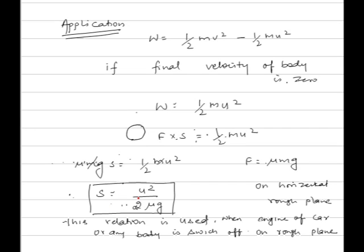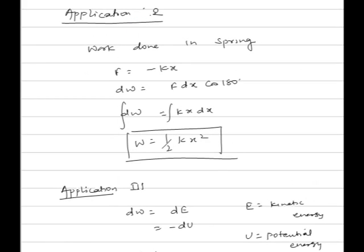Second application: work done in a spring. A spring is an example of a variable force, where force equals minus k into x. The negative sign indicates that F always opposes x. dW equals F into dx cos θ, where θ is 180 degrees, so dW equals k into x dx. Integrating both sides, work done equals half k into x².